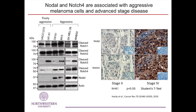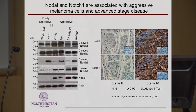The western blot analysis shows nodal expression by bands associated with the aggressive melanoma phenotype, not expressed in poorly metastatic cells. But we don't know which cells are producing it. The immunohistochemistry brown staining for nodal in patients' melanoma tumors just shows where nodal is deposited — it doesn't tell you if this cell produced it or if this cell just has it stuck to the cell surface.